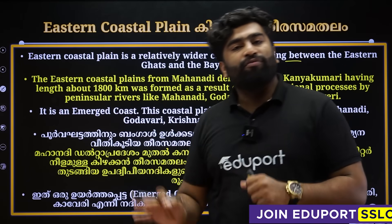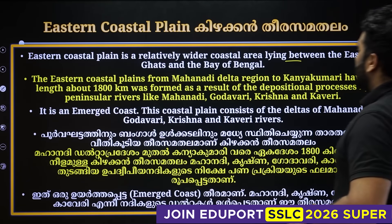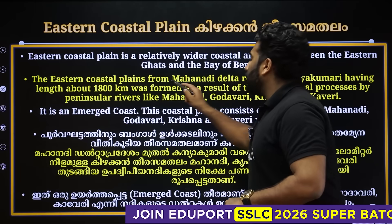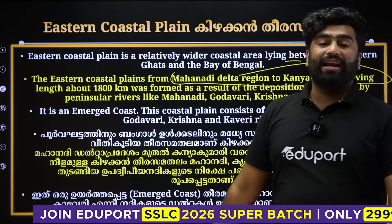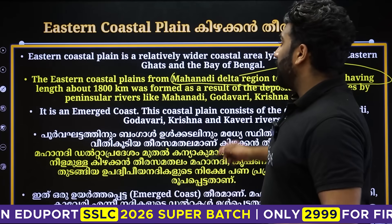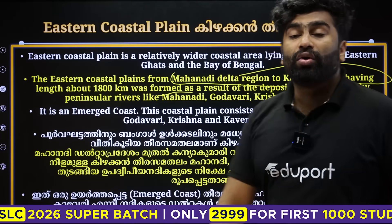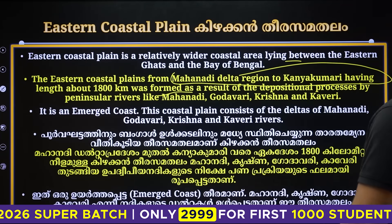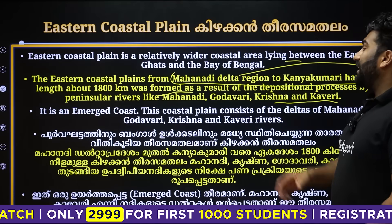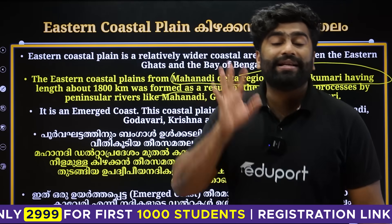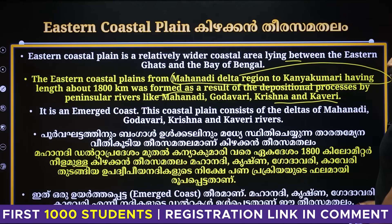The Eastern Coastal Plain lies between the Eastern Ghats and the Bay of Bengal. It is more than 1800 km long. The major rivers — Mahanadi, Godavari, Krishna, and Cauvery — flow through this plain. The sediments deposited by these rivers have formed fertile deltas. This is the main point.